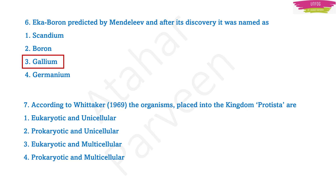Question number seven: according to Whittaker, the organisms placed into the kingdom Protista are — ? The options are: eukaryotic and unicellular, prokaryotic and unicellular, eukaryotic and multicellular, prokaryotic and multicellular. The correct answer is that Protista includes eukaryotic and unicellular organisms.